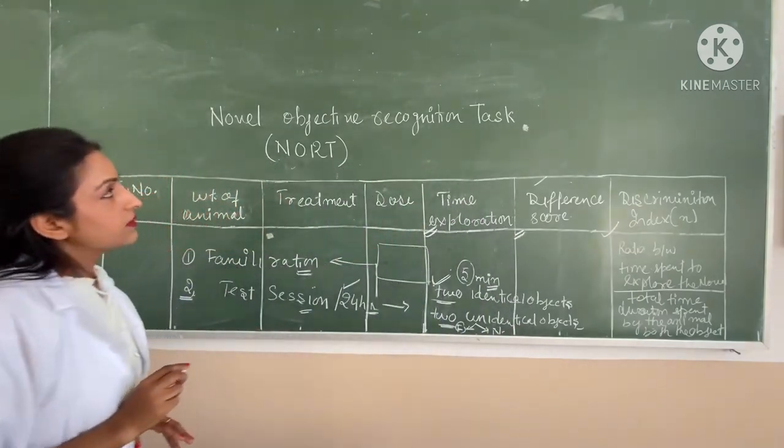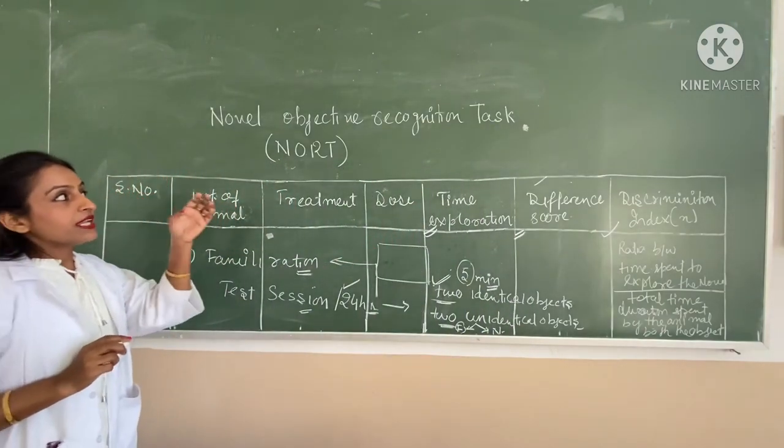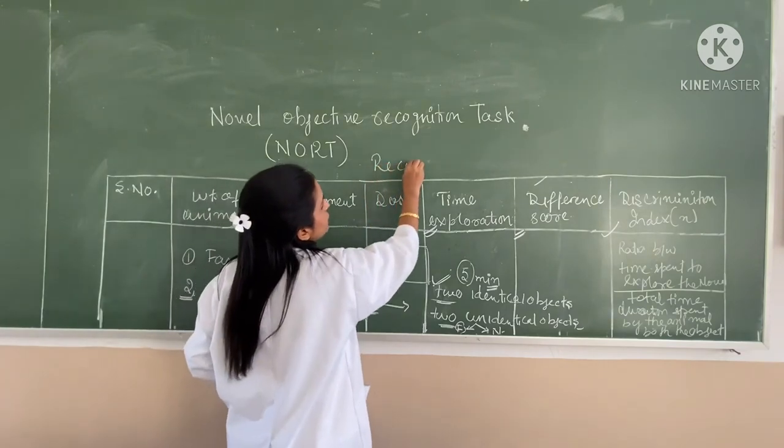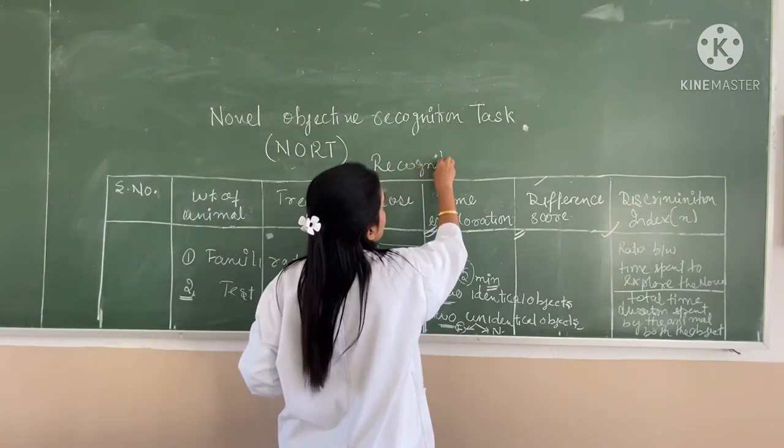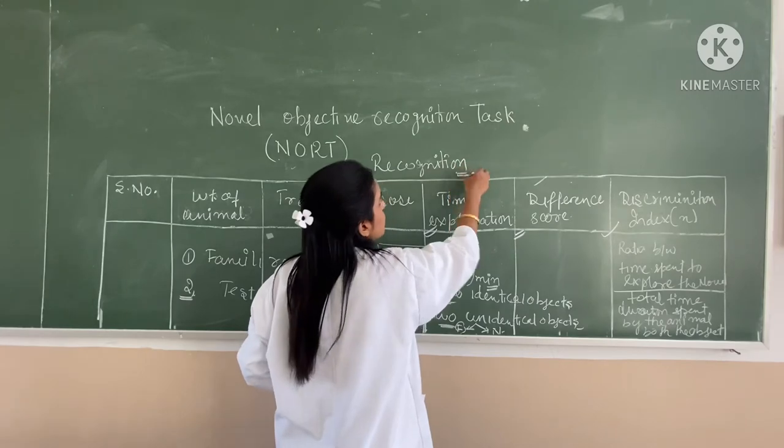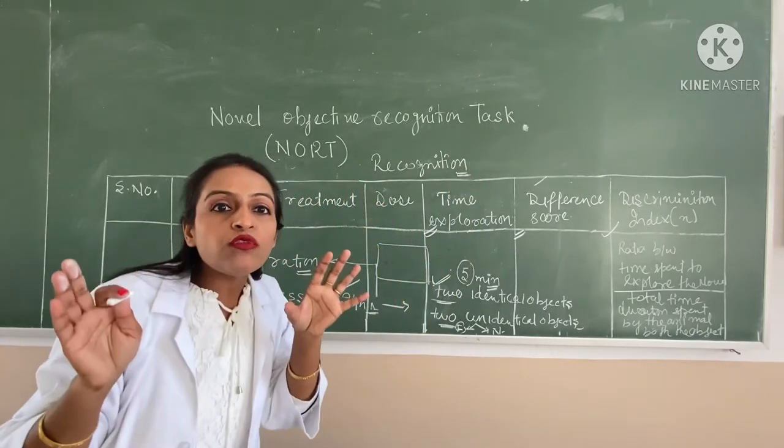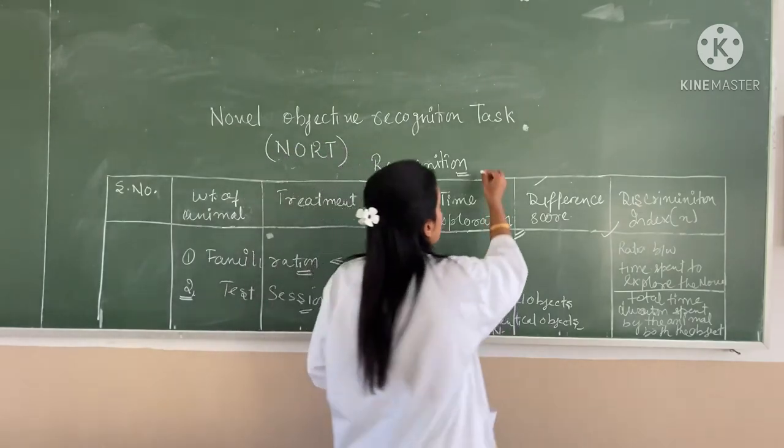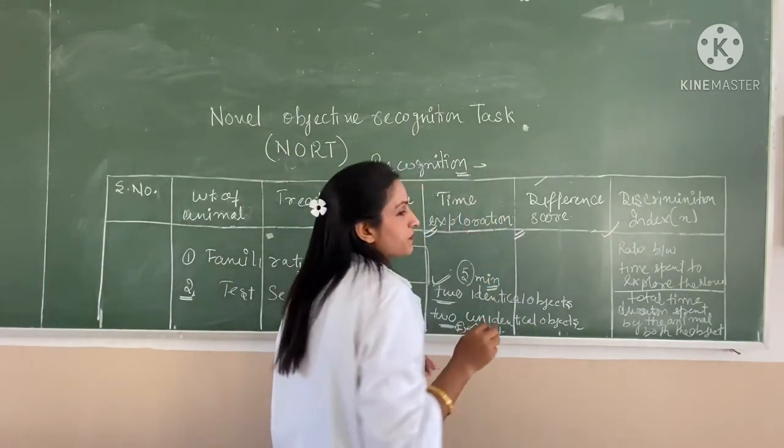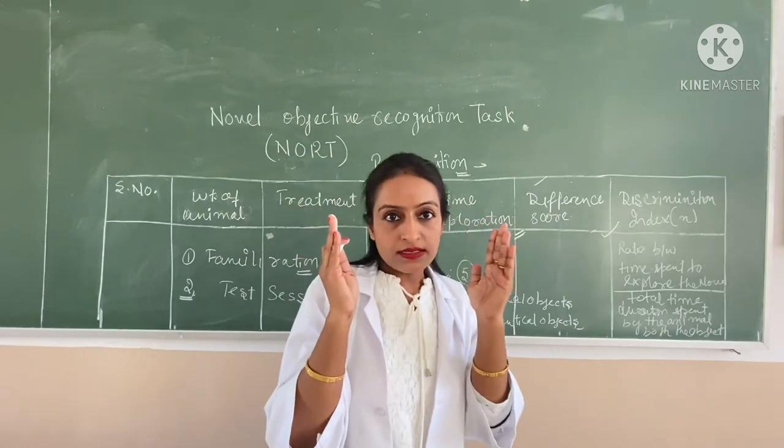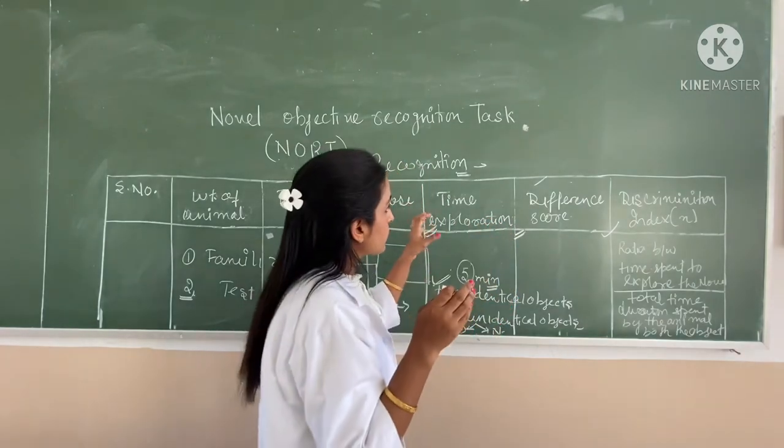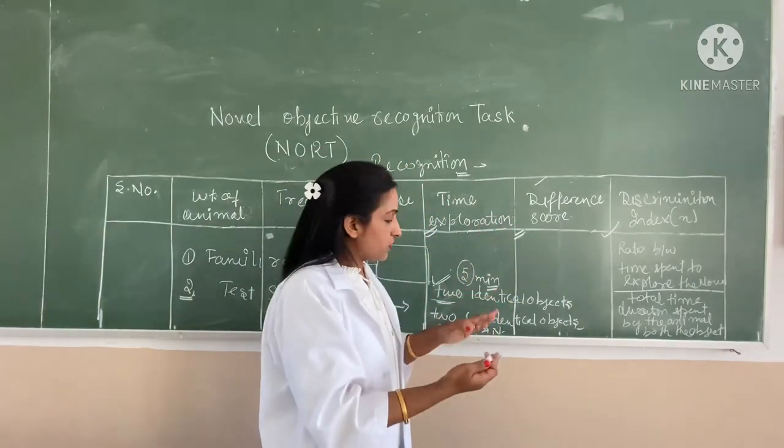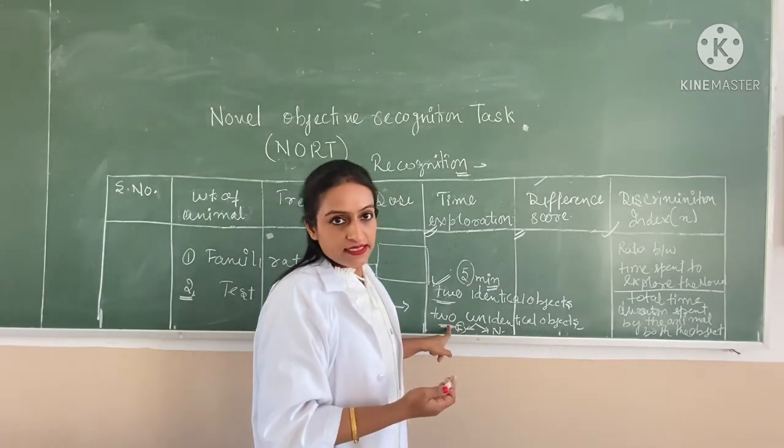And in this novel object test, we basically check the recognition memory. Recognition memory means how the animal is able to recognize the novel object from the familiar object. And the animal with good memory index is able to recognize the familiar object during this second test session.